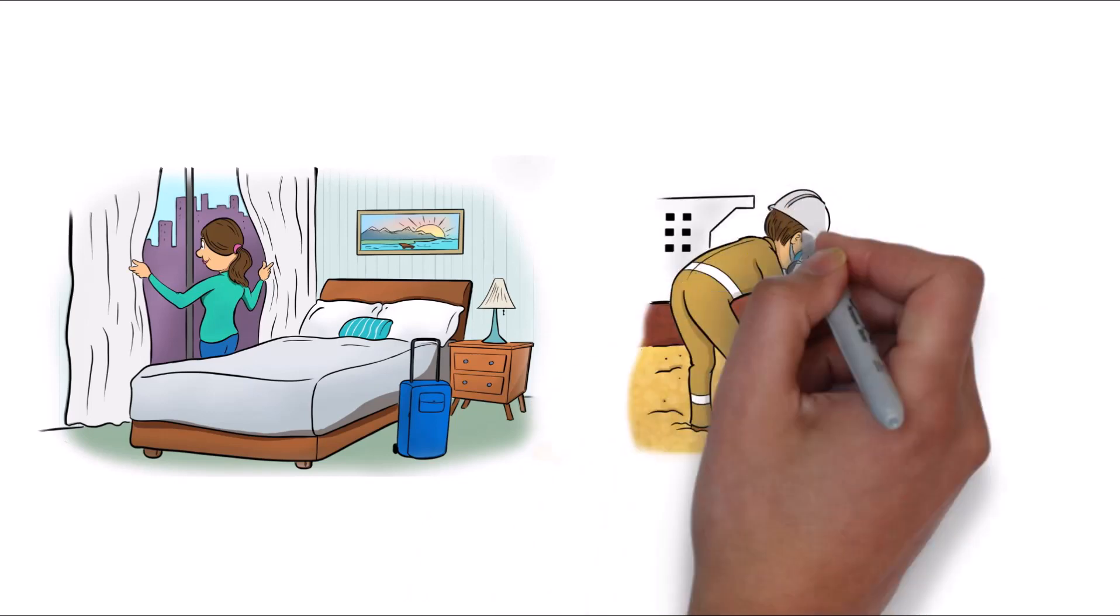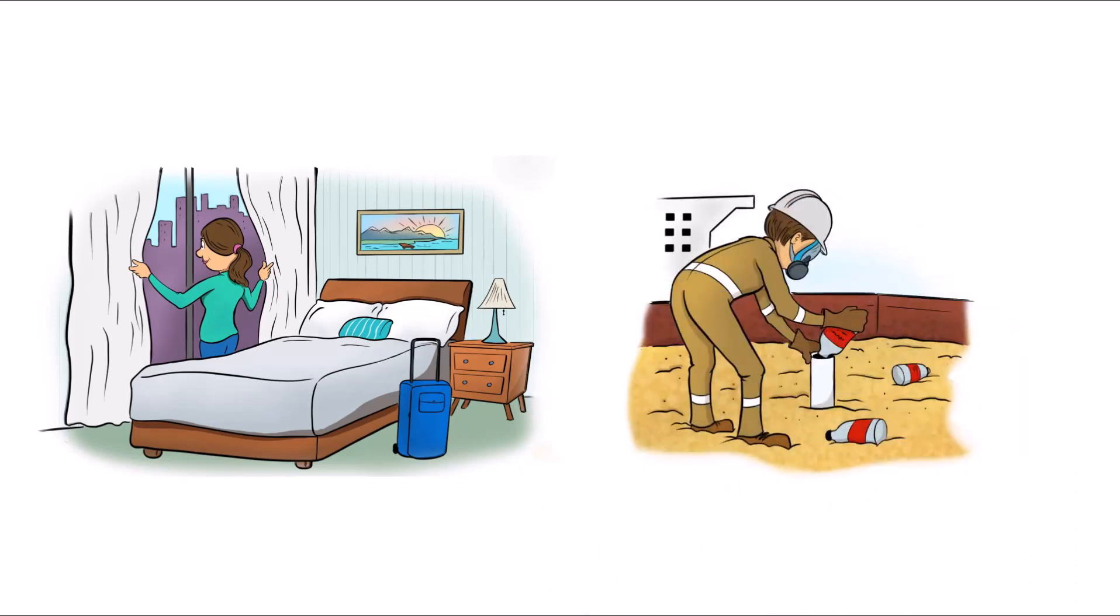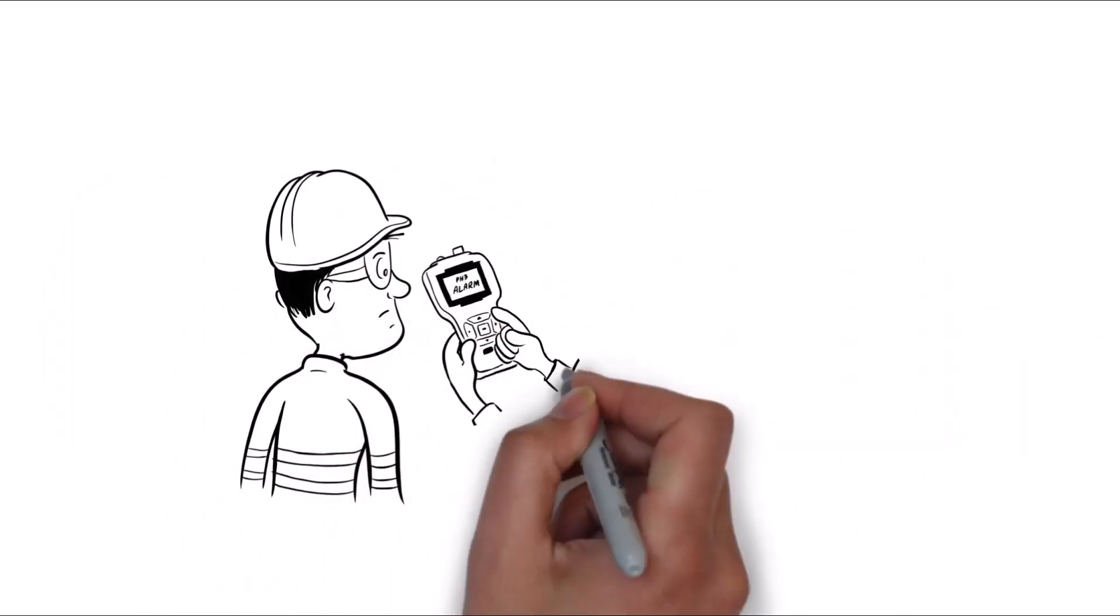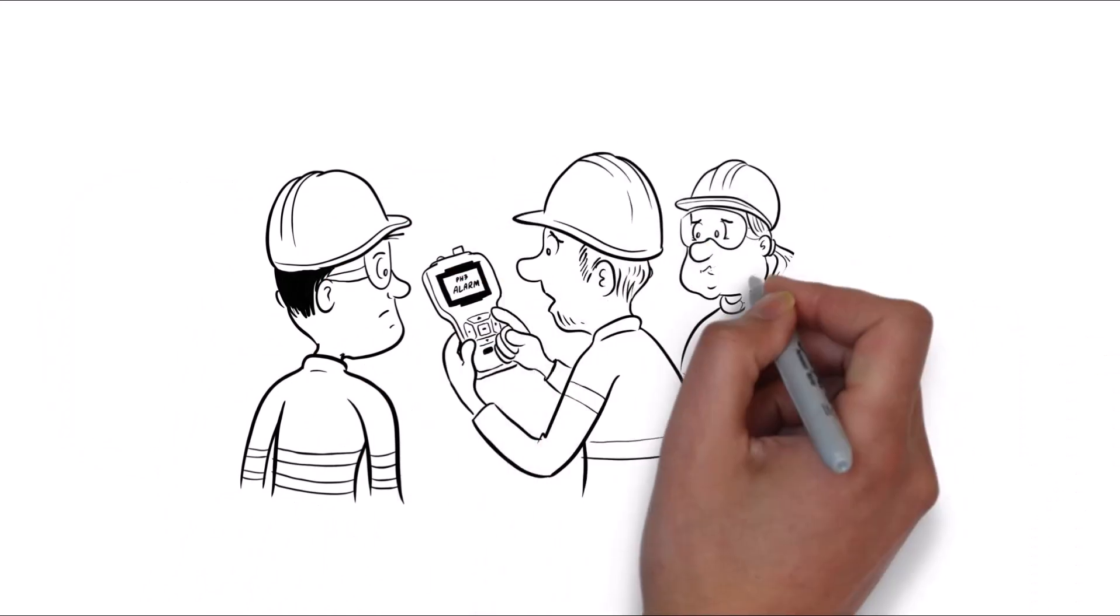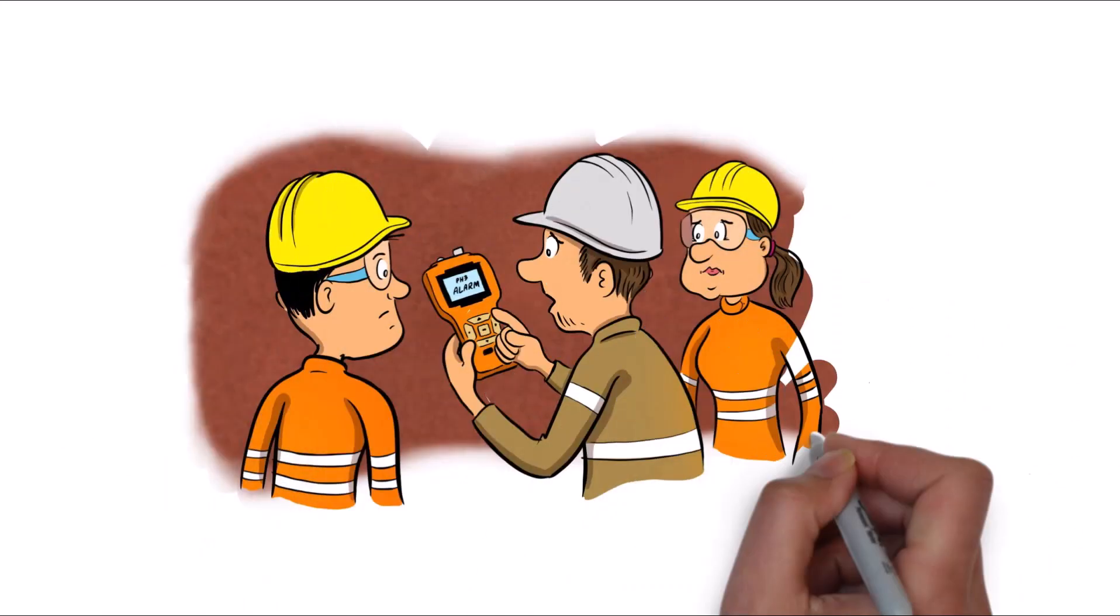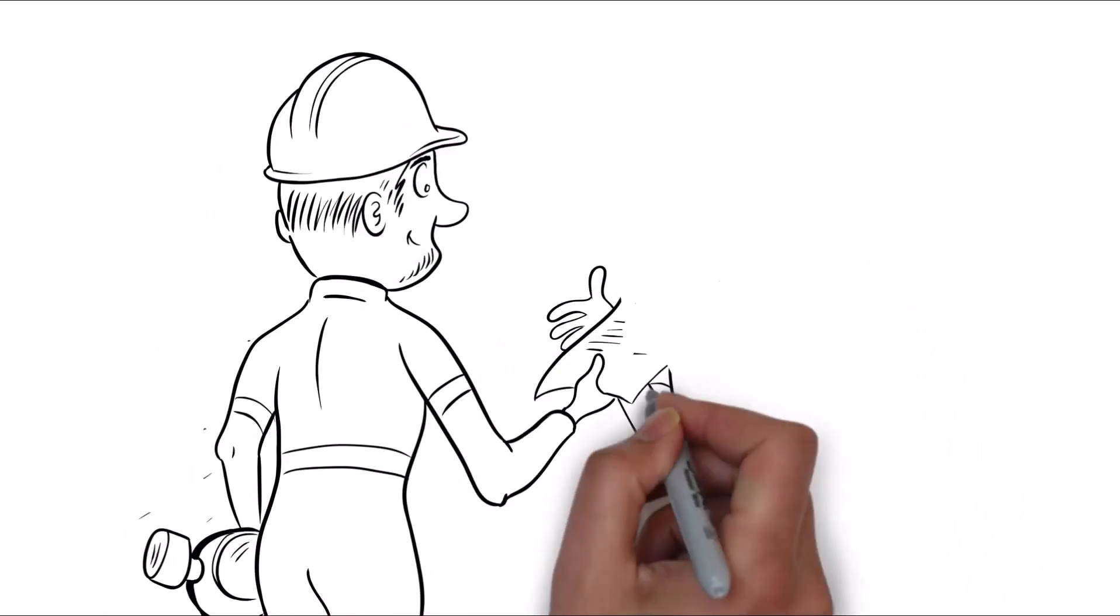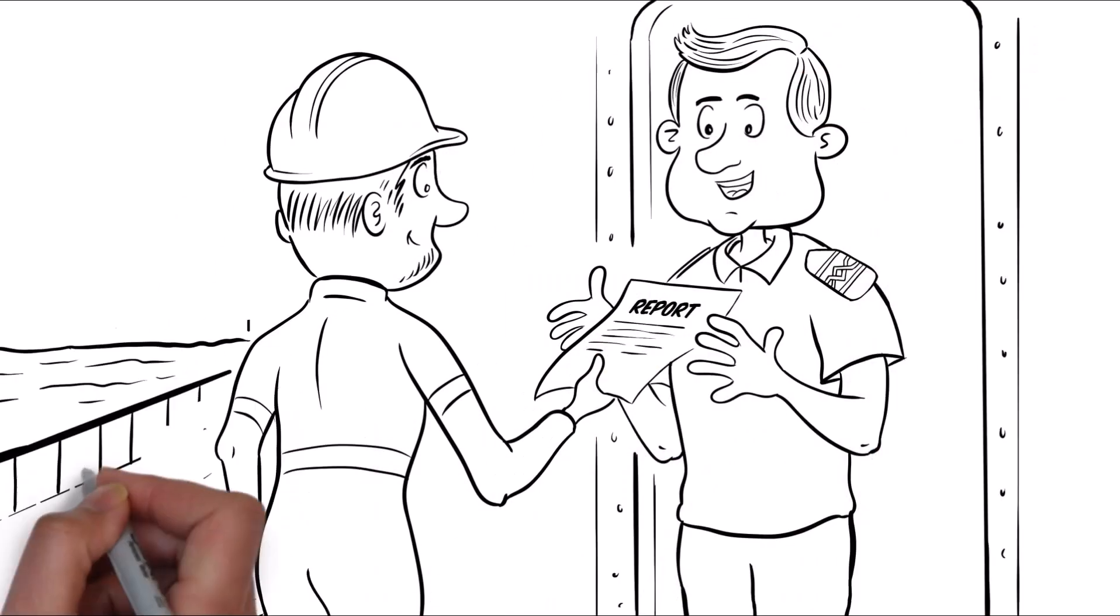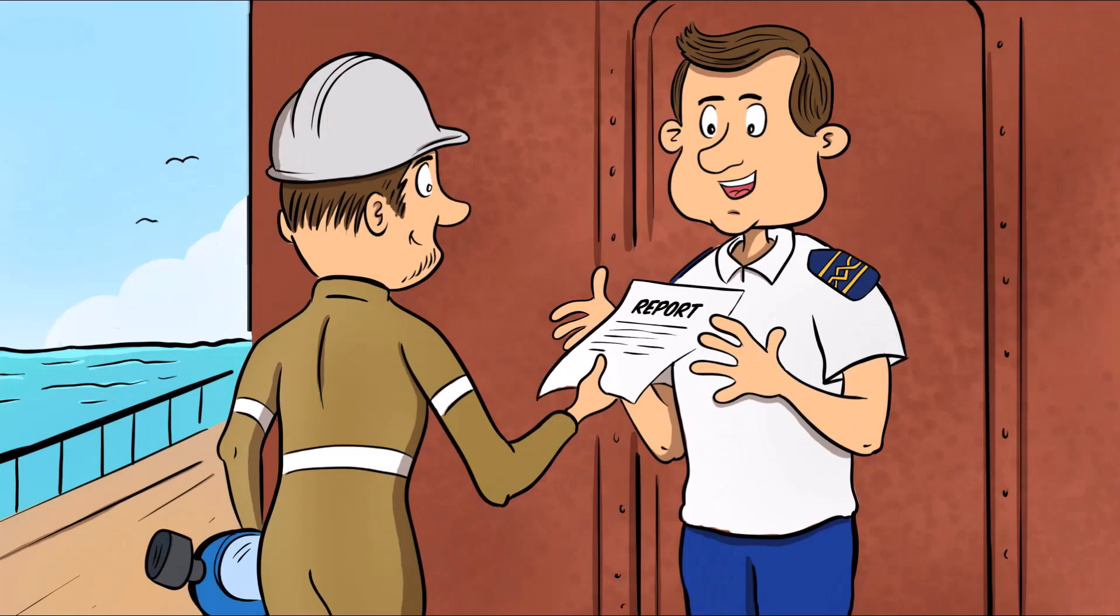After applying the fumigant, the fumigator remains on board to ensure no gas leaks occur from cargo holds. Then before departing, they confirm that the ship is safe and give the master a written statement.